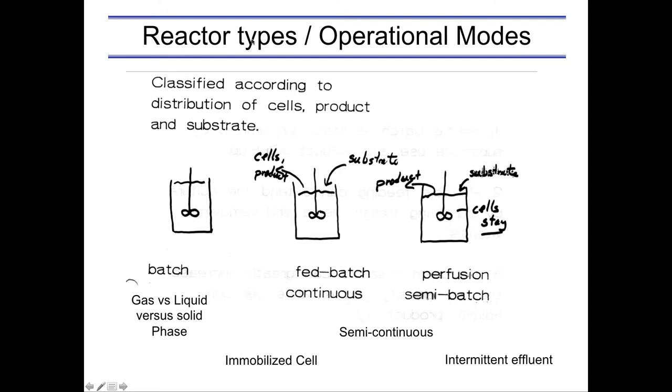So, the next slide here, which says reactor types and operational modes, has those schematics of the cells of the reactors, and it's really emphasizing the point I made in the last slide, that it's all about the distribution of the cells and where the product and substrate are. A batch being, of course, really referring to the liquid phase, because remember the gas phase is, for the most part, continuously flowing through the system, but we tend to focus predominantly on the liquid. Fed batch and continuous have cells being, substrate being added and continuously removed, and perfusion has to do with retaining the cells inside.